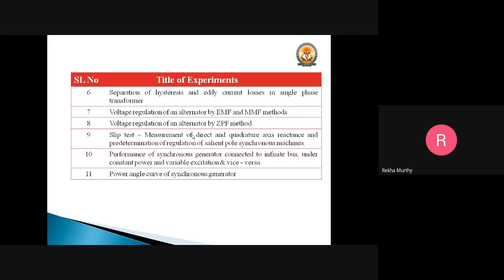This completes the transformer part. Related with the generator, we are going to cover alternator experiments: voltage regulation of an alternator by EMF and MMF methods, voltage regulation by ZPF method, and the slip test — measurement of direct and quadrature axis reactance and predetermination of regulation of a salient pole synchronous machine. Also covered is the performance of the synchronous generator connected to infinite bus under constant power and variable excitation, and vice versa, as well as the power angle curve of a synchronous generator.